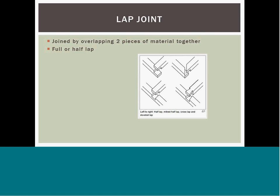In a half-lap, a lap joint is the technique of joining two pieces of material together by overlapping them. In a full lap, no material is removed from either of the members to be joined, resulting in a joint which is the combined thickness of the two members. In a half-lap joint, material is removed from each of the members so that the resulting joint is the thickness of the thickest member. Most commonly, in half-lap joints, the members are of the same thickness and half the thickness of each is removed.